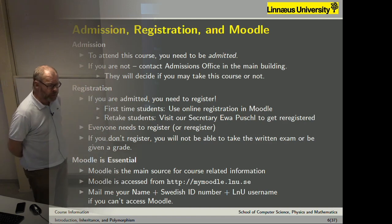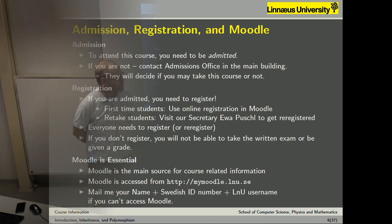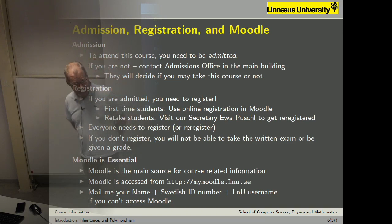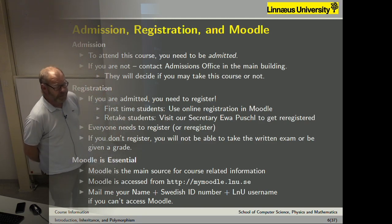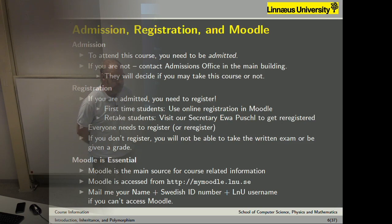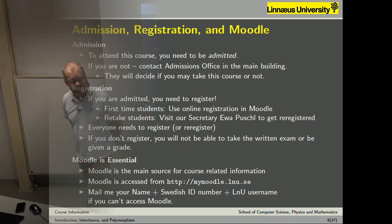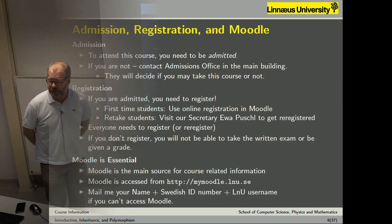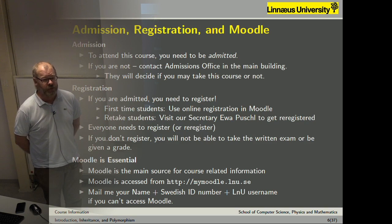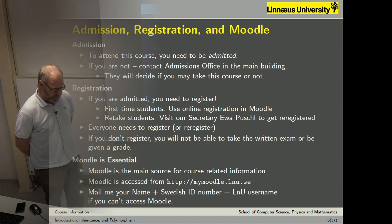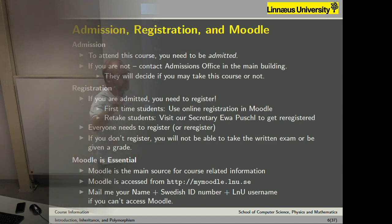Many of you have contacted me about the problem of registering using the online system. The prerequisites for this course is the previous course, and since we haven't corrected the exam and the fourth assignment, none of you have passed the previous course, so none of you are accepted to this course. The online system doesn't work, so we will do it manually. You sign up on this list and later come talk to me or Eva Pulser, and we will try to handle it. Most of you will be handled using this list.